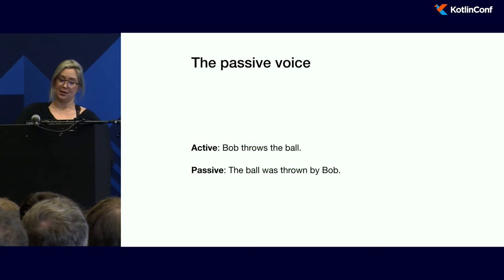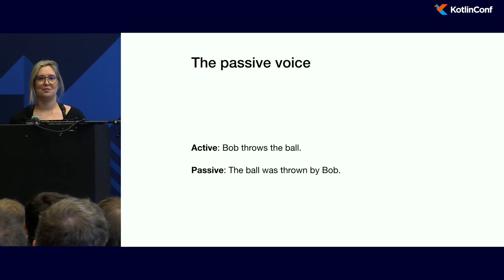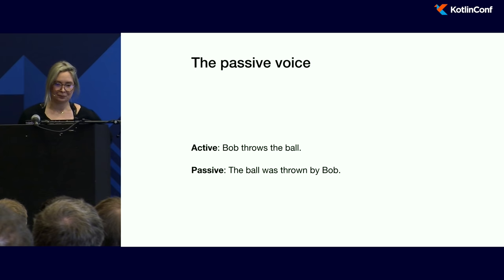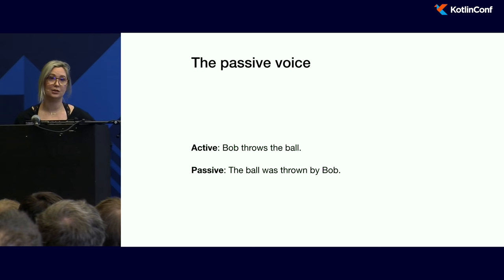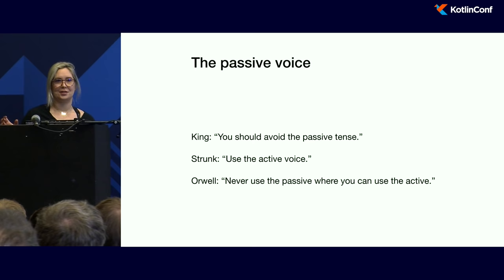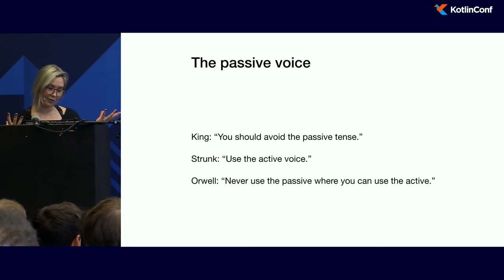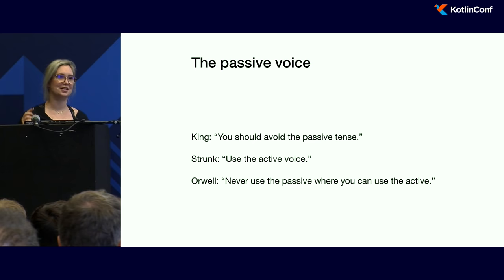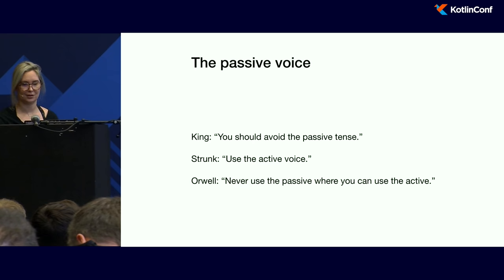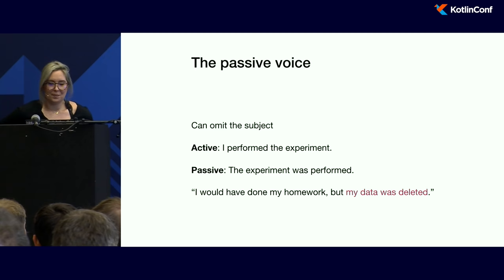Let's talk about the passive voice, which is a major punching bag for writing teachers and anyone who writes about how to write. The active tense is something like "Bob throws the ball," and the passive tense is when you reverse it and say "the ball was thrown by Bob." Our sages of writing all have strong opinions: Stephen King says avoid the passive tense, Strunk says use the active voice, and Orwell says never use the passive where you can use the active. Unanimous.